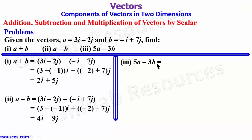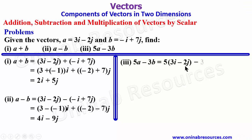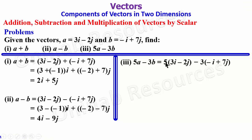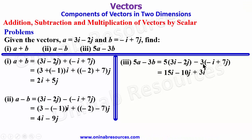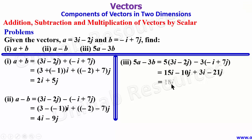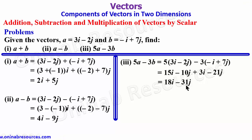For 5a - 3b: 5(3i - 2j) - 3(-i + 7j). Expanding: 15i - 10j + 3i - 21j. Collecting like terms: 15i + 3i = 18i, and -10j - 21j = -31j. The result of 5a - 3b is 18i - 31j. That's all for addition, subtraction, and multiplication of vectors by scalar.